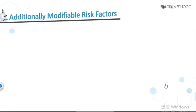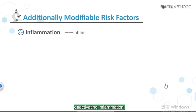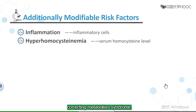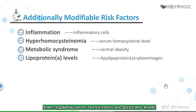Of course, we can also lower the risk by regulating the following factors: reducing inflammation, correcting metabolic syndrome, and regulating serum homocysteine and lipoprotein levels.